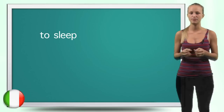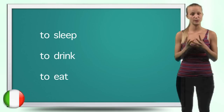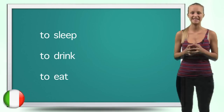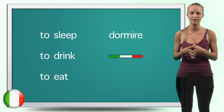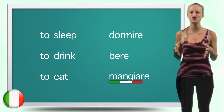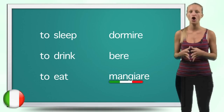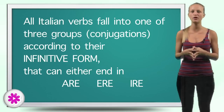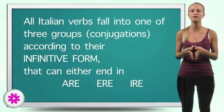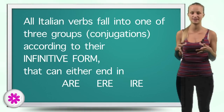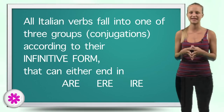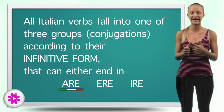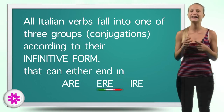In Italian, the infinitive is composed of just one word: dormire, bere, mangiare. All Italian verbs fall into one of three groups, called conjugations, according to their infinitive form, which can end in -are, -ere, or -ire.